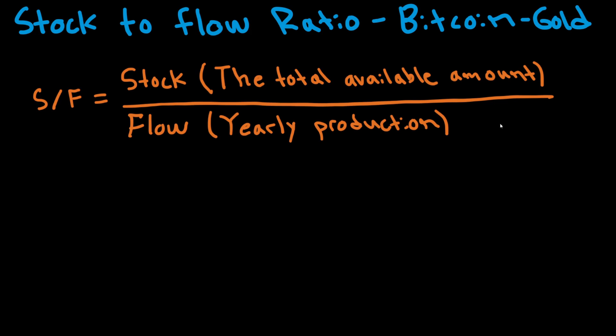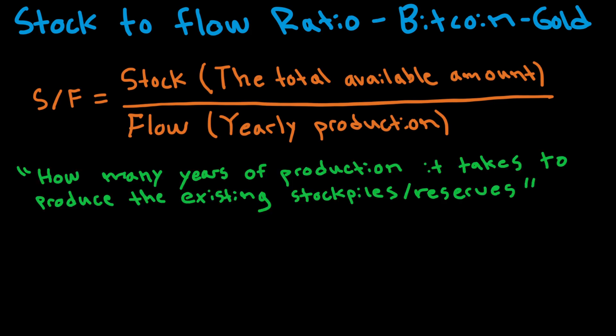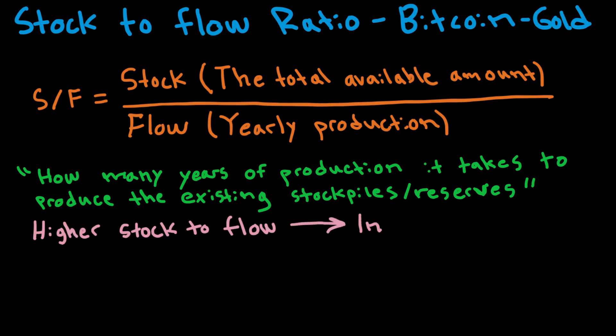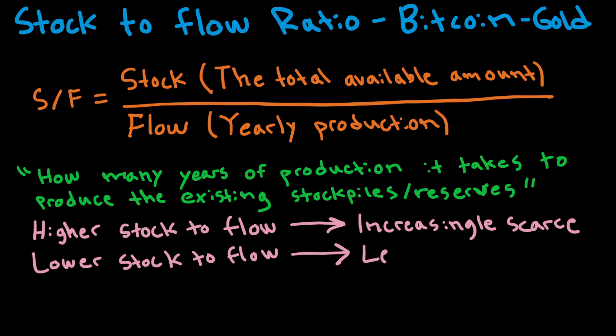What does this formula mean? It compares the current stock — how much we already have — to the inflow of yearly production, i.e., how much more of this commodity we produce every year. We can think of it as how many years of production it would take to produce the existing stockpiles or reserves. A higher stock-to-flow ratio means the commodity is increasingly scarce, while a lower ratio means it is less scarce.